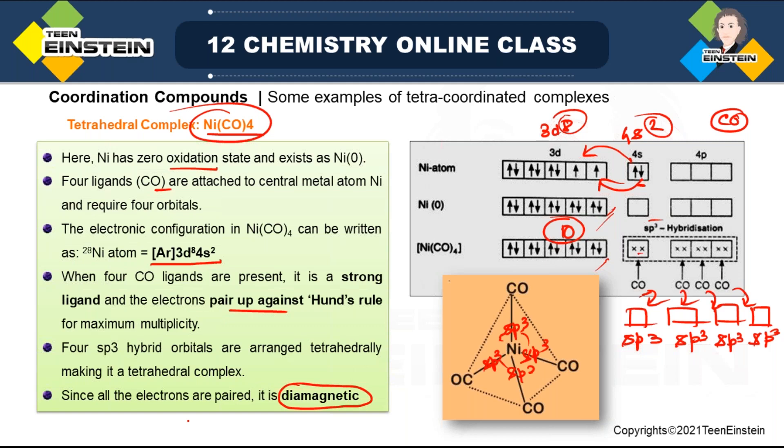By drawing the electronic configuration you can understand the geometry, hybridization, whether there are unpaired electrons, and the magnetic nature — paramagnetic or diamagnetic. You must first determine the oxidation state of the metal, the nature of the metal, and the nature of the ligand (strong or weak field). After pairing, the vacant orbitals available are used for hybridization, giving the geometry and information about unpaired electrons.